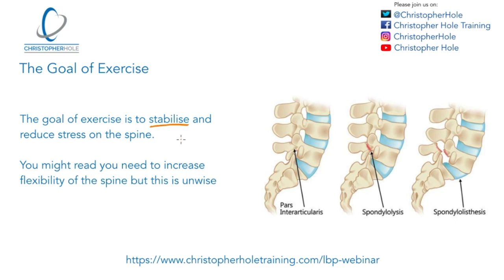As we stabilise the spine, this will start reducing stress on it. If we use certain exercises like sit-ups, crunches, or if we do squats incorrectly — bending at the spine — or too many twisting exercises, that's only going to increase stress. Those are the types of exercises we want to remove from the training programme. We want to get the spine into a neutral position, stiffen the torso around it so it holds position, creating movement from the hips and shoulders while maintaining posture throughout the spine.